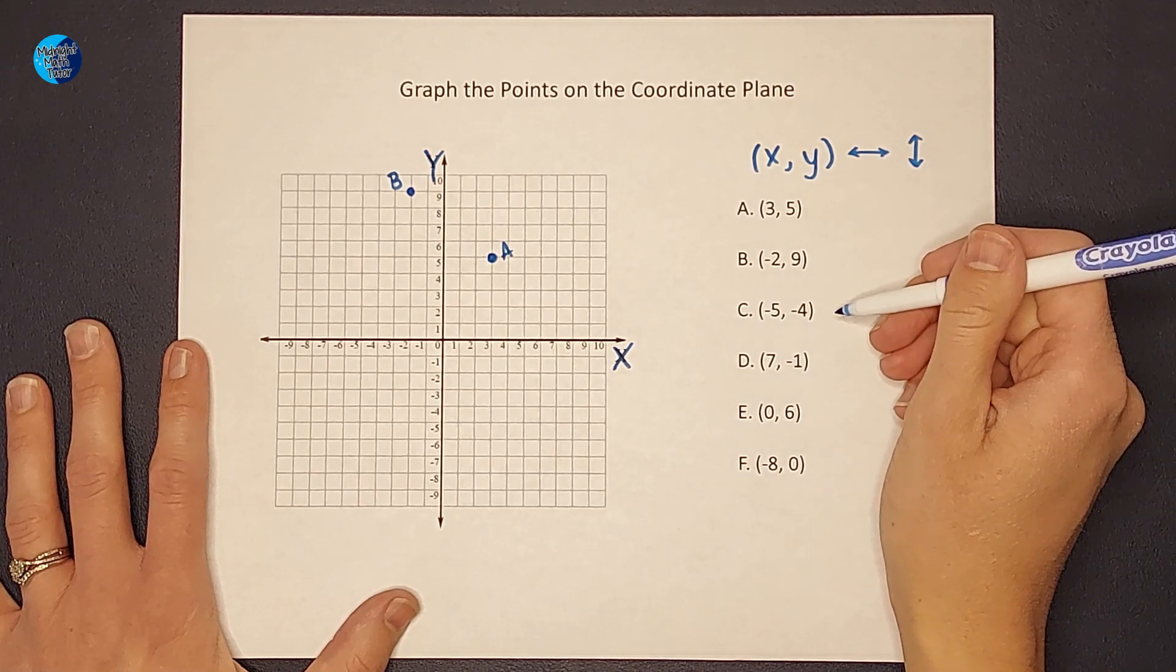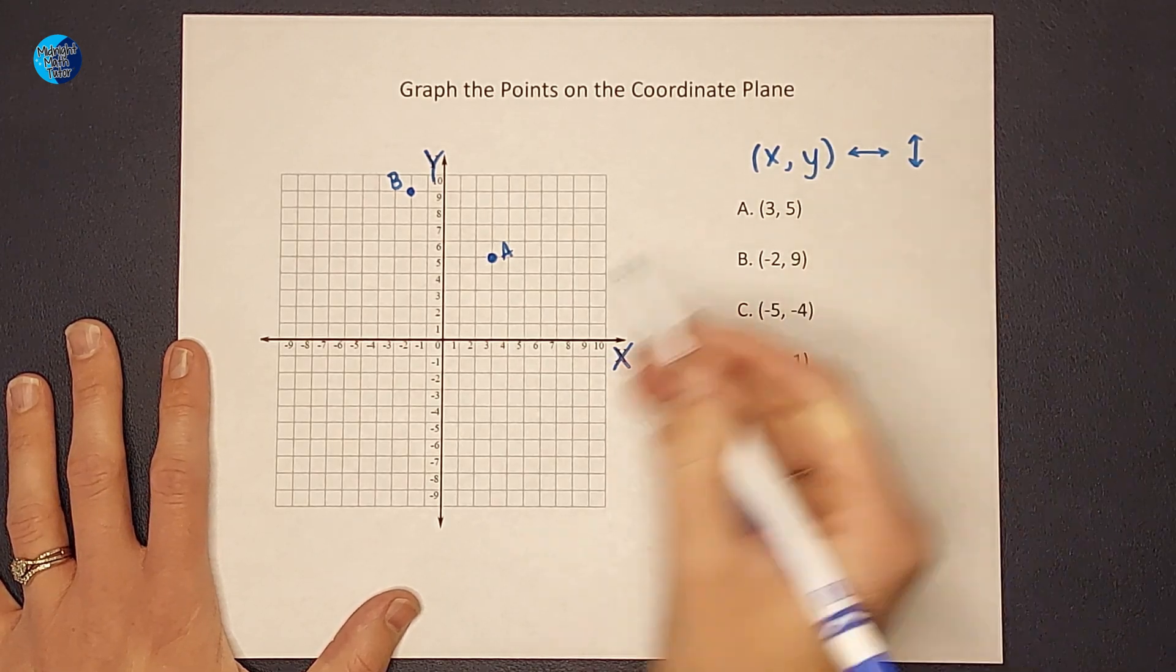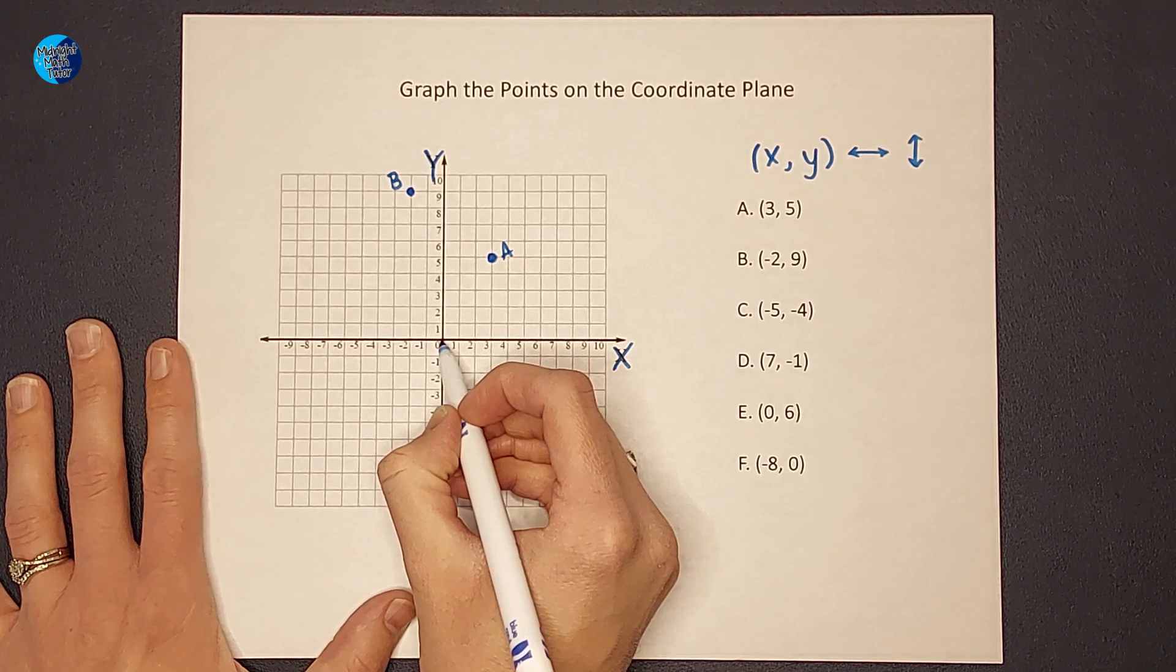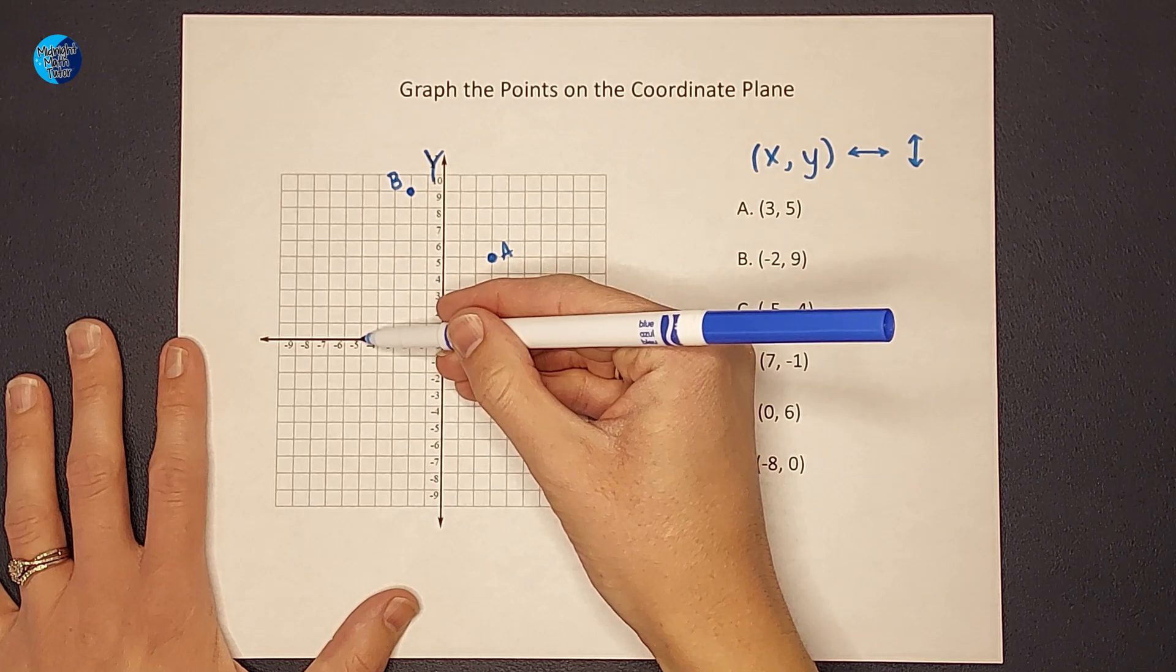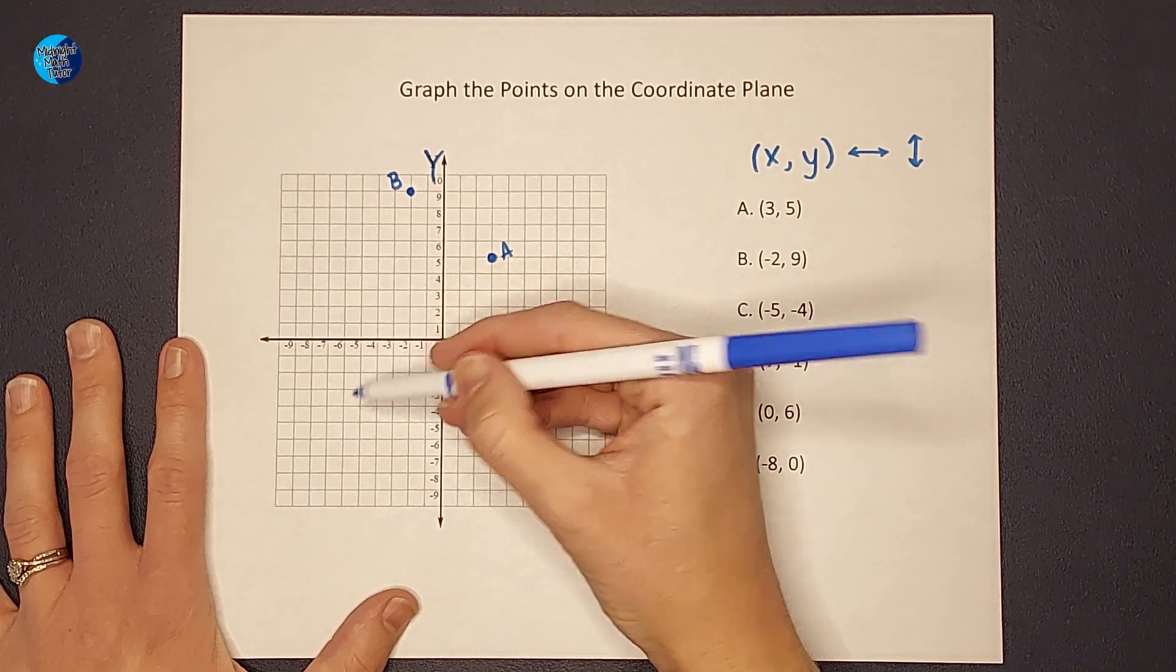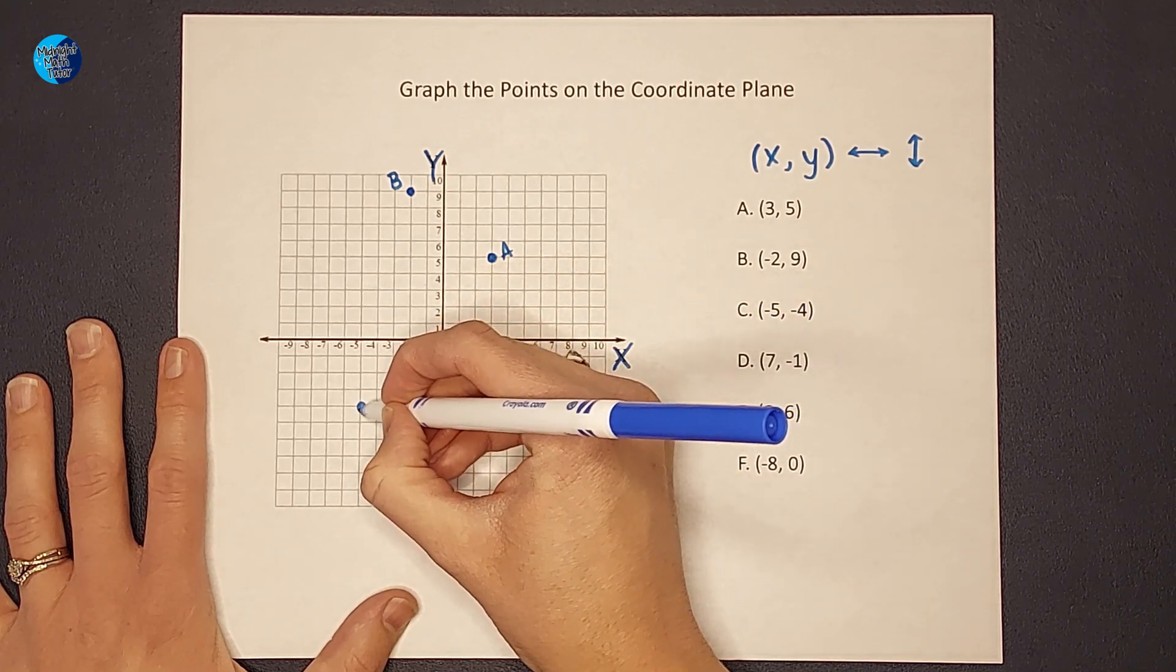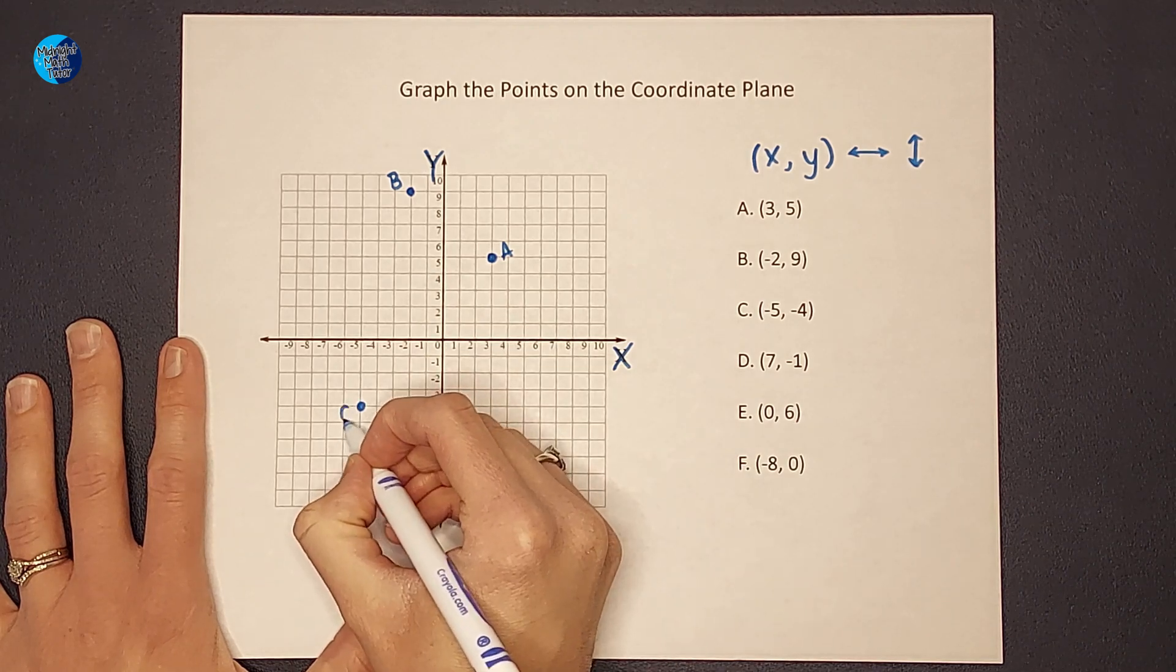Next I have C where they are both negative. So again, I start at 0, 0. I'm gonna go to the left 5 for negative 5 and then down 1, 2, 3, 4. And that is point C.